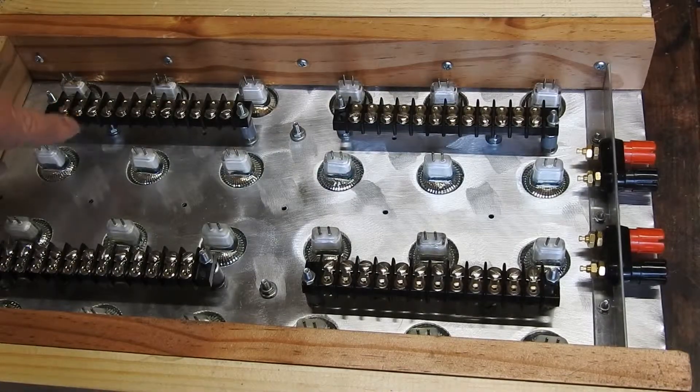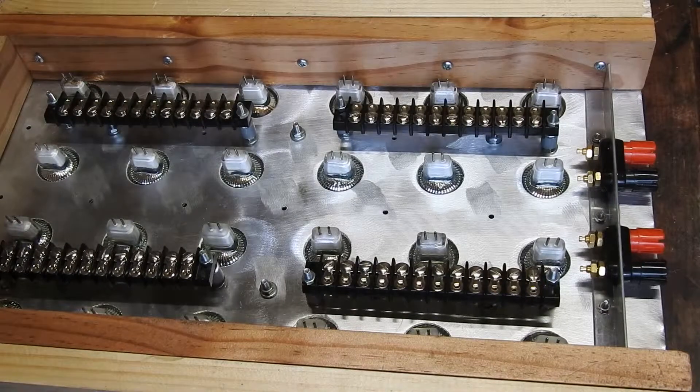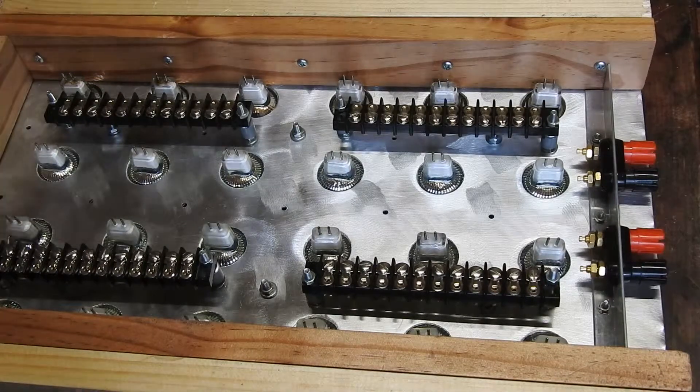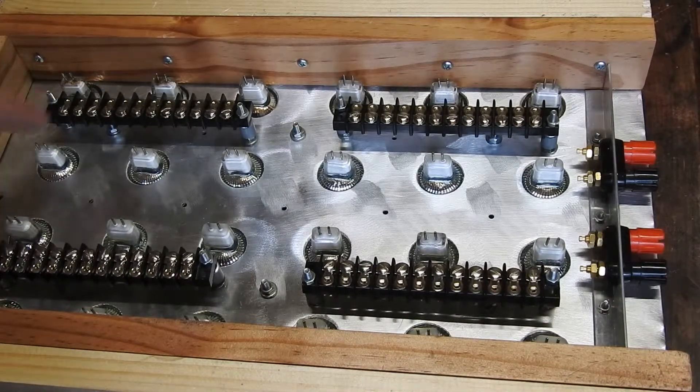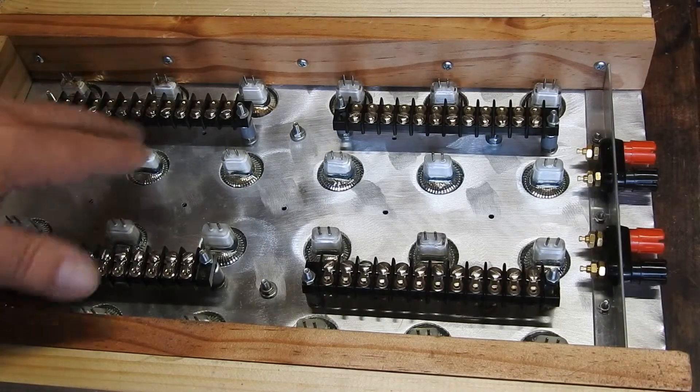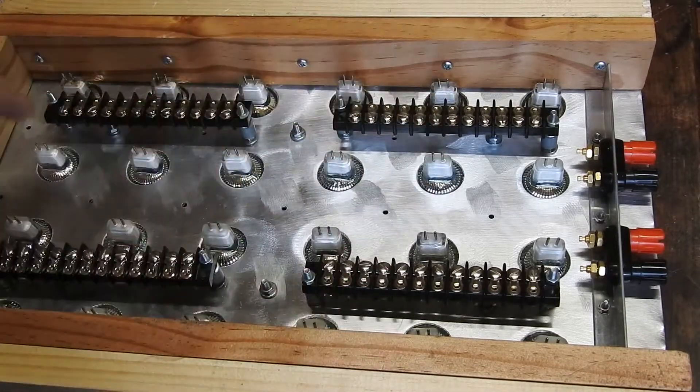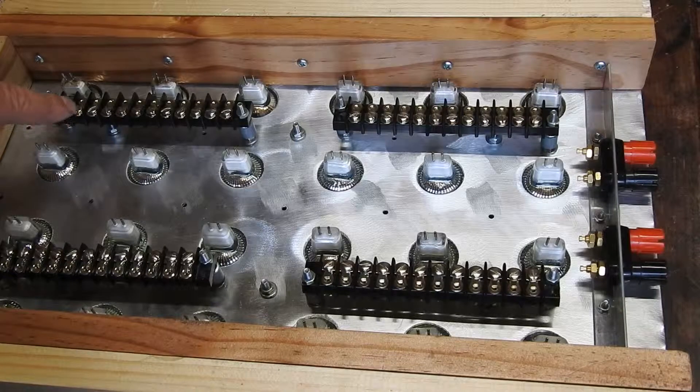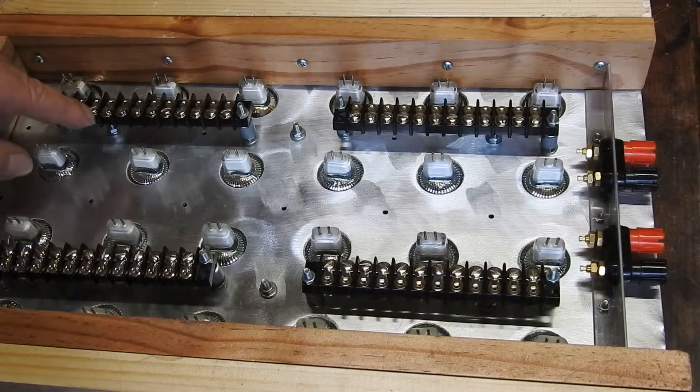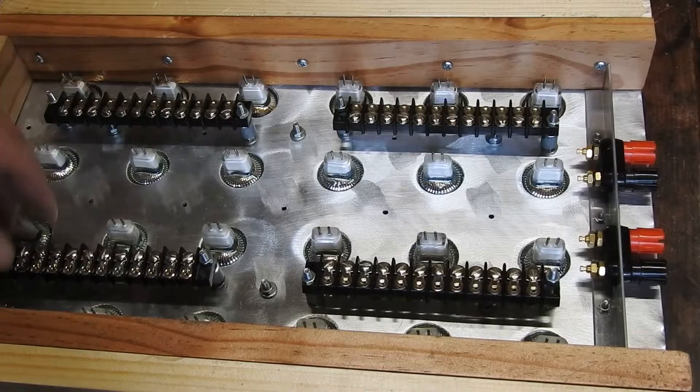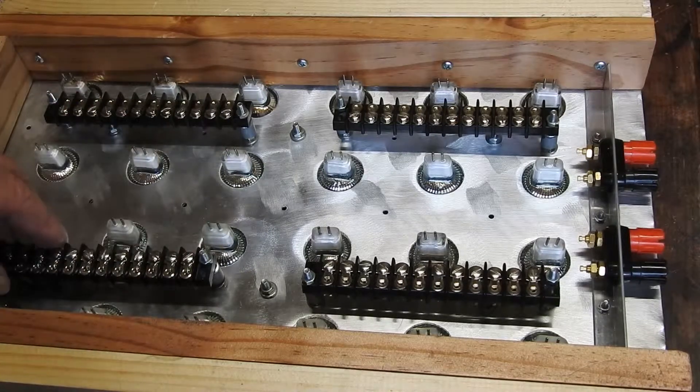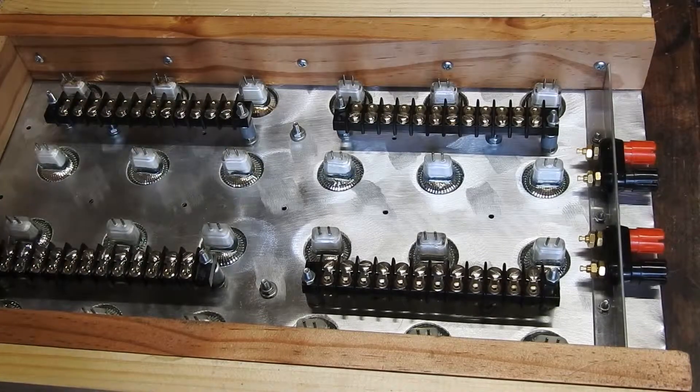Once that's done you'll be able to get any combination of globes by joining together the screw terminals. I'm thinking of having a bunch of little leads with spade connectors on each end to allow that to be done. In cases where globes are just in series, I'll just have a little bit of wire linking from one screw across to the next. So let's do the wiring.